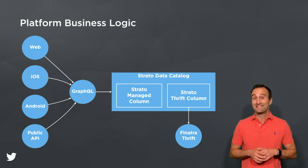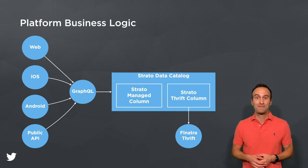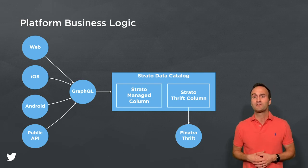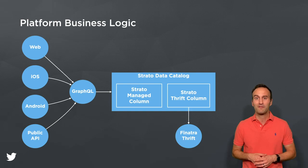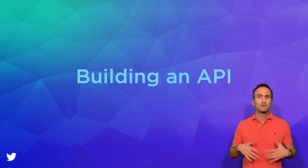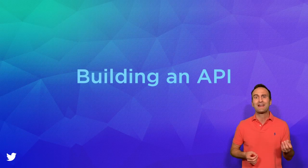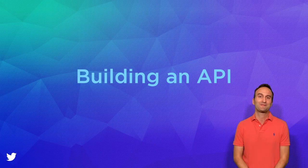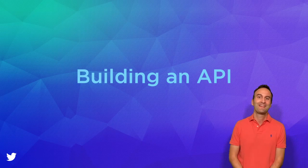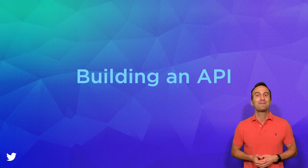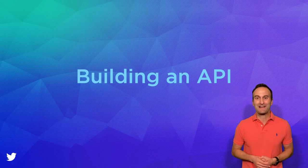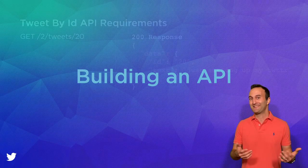Now that I've discussed the history of the Twitter APIs and the high-level goals and design of our new public API platform, let's walk through an end-to-end example that shows how to create two new Twitter API endpoints. The requirements from our product manager are as follows.